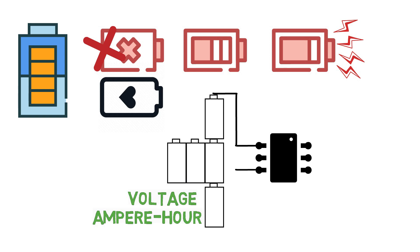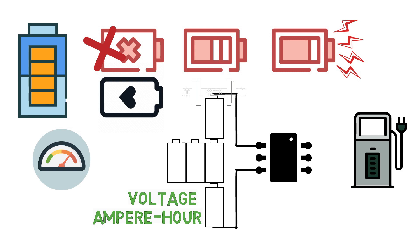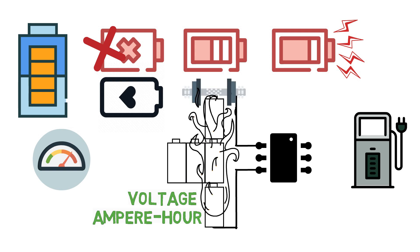The battery management system, also known as the BMS, communicates with the charger and provides necessary commands to charge the battery pack efficiently. When battery packs are charged with DC fast chargers, or when the vehicle is driving at very peak power, the load on the battery pack increases tremendously and they produce heat. This heat can cause a fire in the battery pack, so to avoid such a disaster a thermal management system is required, which is also taken care of by the BMS itself.